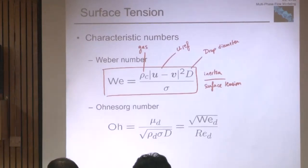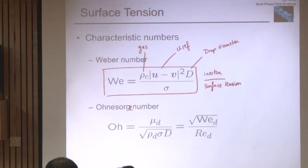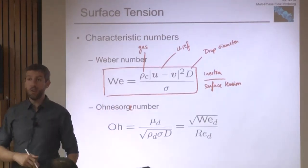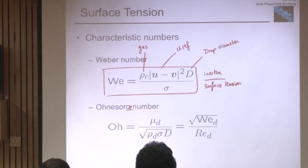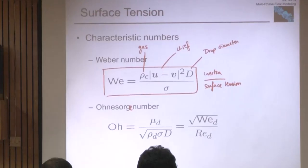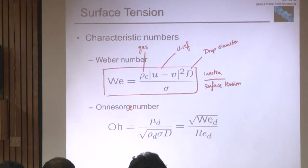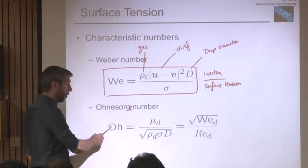The Ohnesorge number is the ratio of the viscous force to the surface tension force. In problems where inertia is not the dominant factor, the Ohnesorge number can be very interesting — typically low Reynolds number problems where surface tension plays a role. We only have three forces, so we can't define three independent non-dimensional groups: the Weber number, Reynolds number, and Ohnesorge number are related to one another.